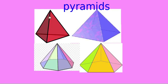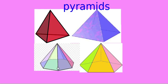Edges or sides. For the triangular pyramid: three base edges and three lateral edges. Square pyramid: four base edges and four lateral edges. Pentagonal pyramid: five base edges and five lateral edges. Hexagonal pyramid: six base edges and six lateral edges.